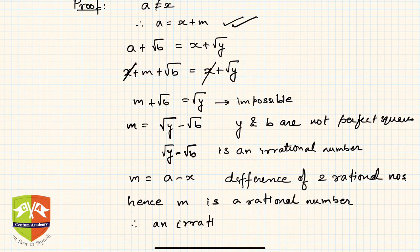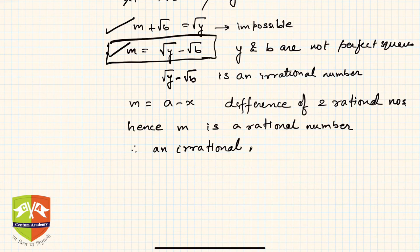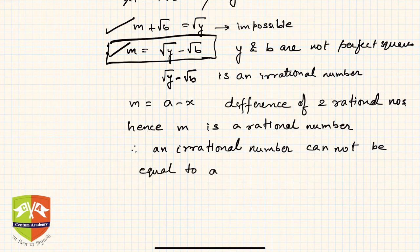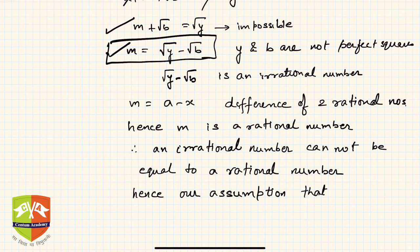So we are trying to equate an irrational number with a rational number. But an irrational number cannot be equal to a rational number — this is the fundamental concept we have learned. Hence our assumption that x is not equal to a is wrong.